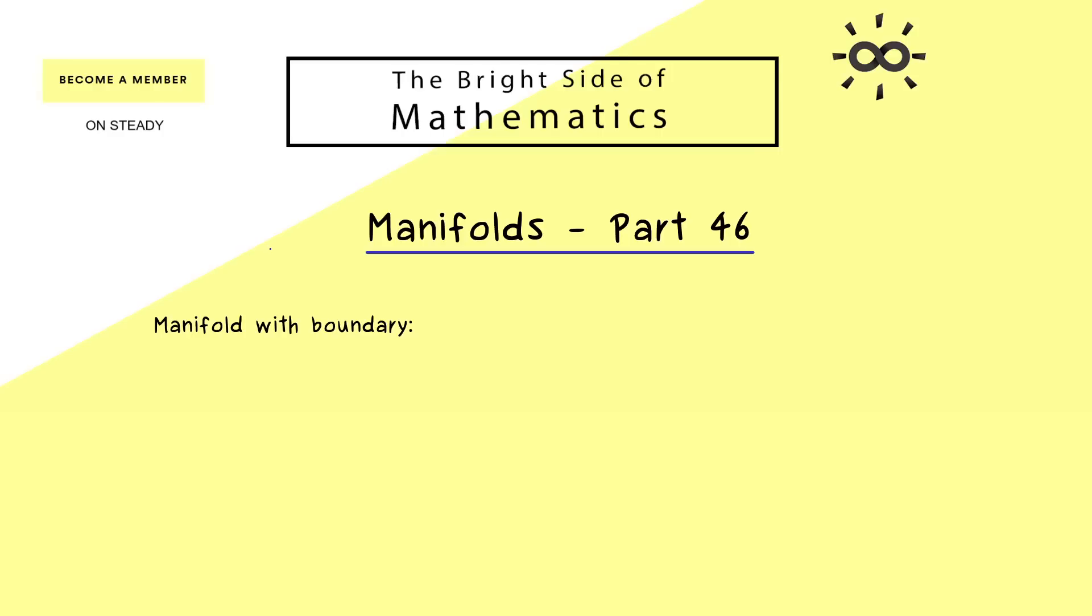Okay, then let's immediately start by recalling the important definition of a manifold with boundary from the last video. Essentially we have the same definition as for the original smooth manifold, but now also charts to the half-space are allowed.